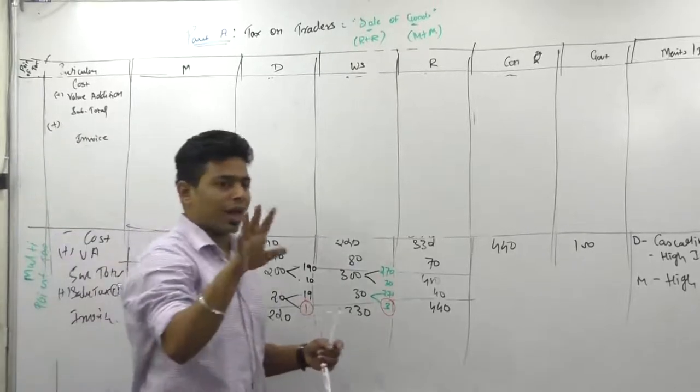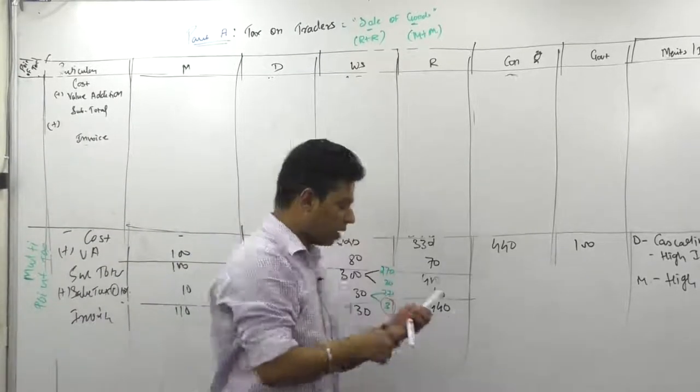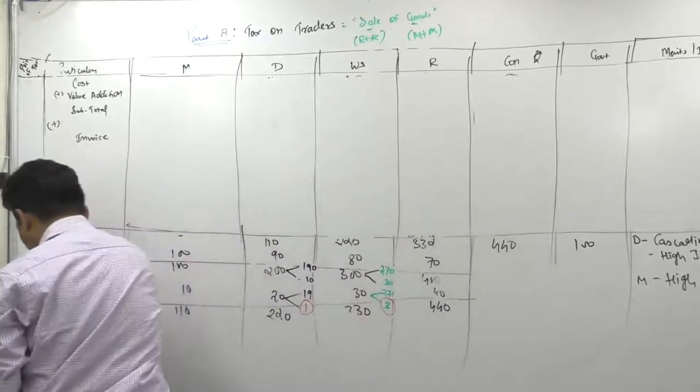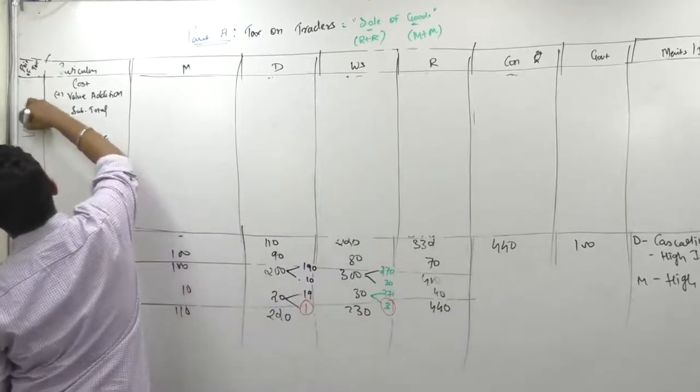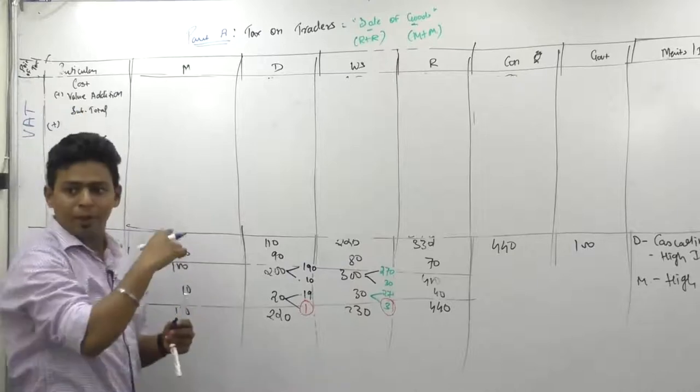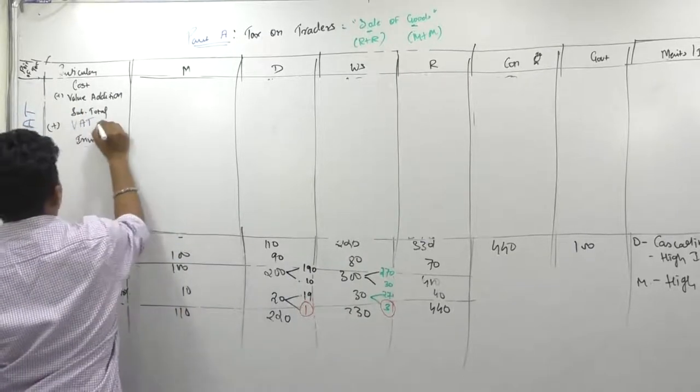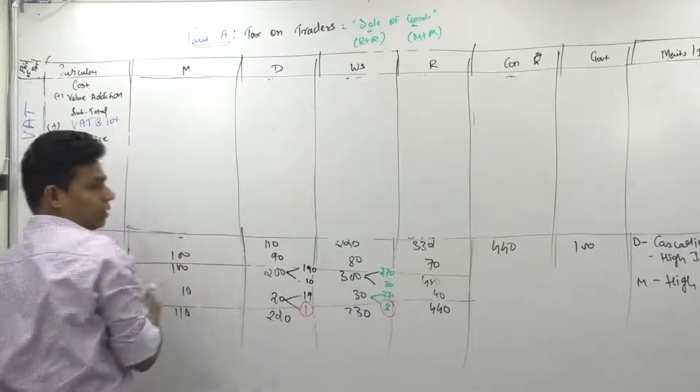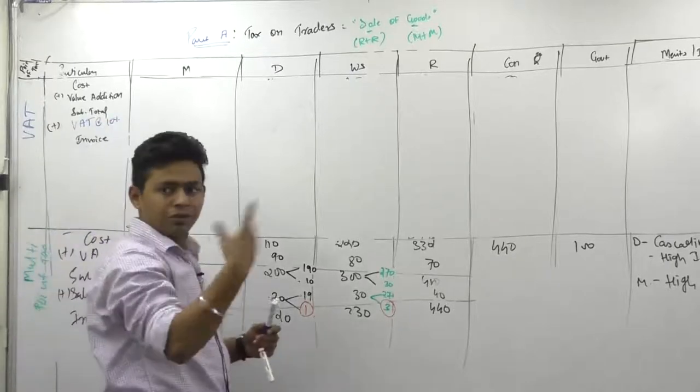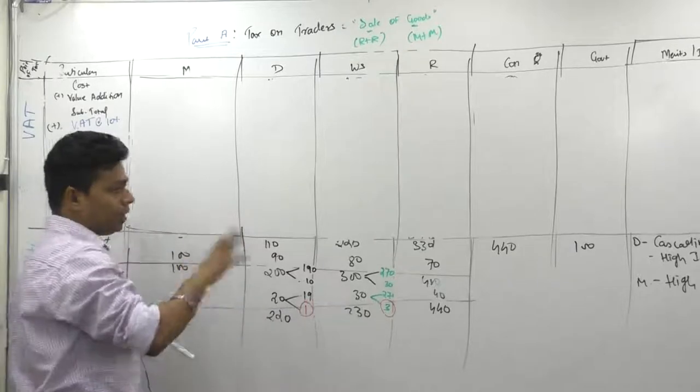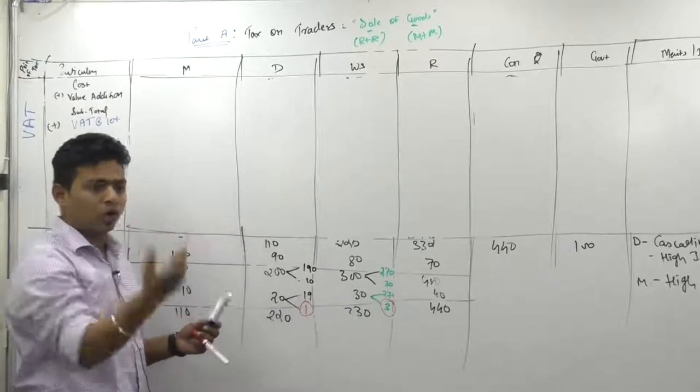So all these three systems were having some problem. Those problems are resolved in new system called value-added tax system, VAT law. And they started calling sales tax as VAT. The name of sales tax was changed to VAT, value-added tax. Now let me teach you how VAT operates and then only you copy.